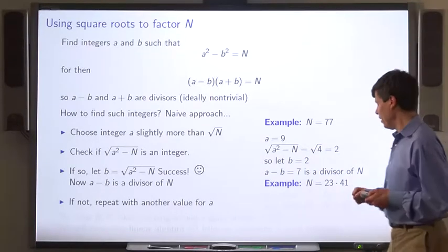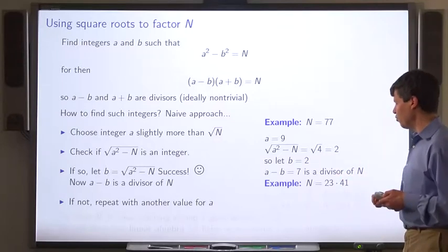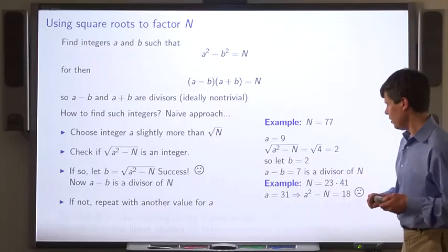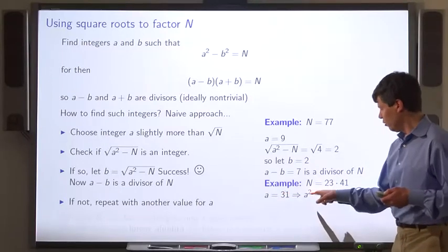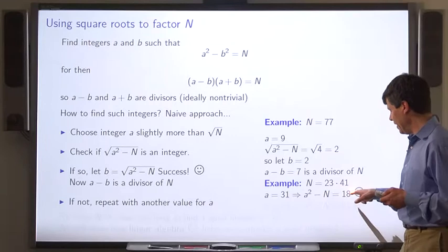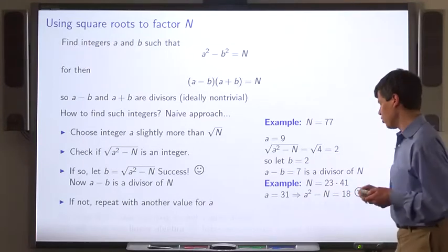Let's try another example. n equals 23 times 41. We try a equals 31. Look at a squared minus n, that's 18. Okay, well, that's not a perfect square.